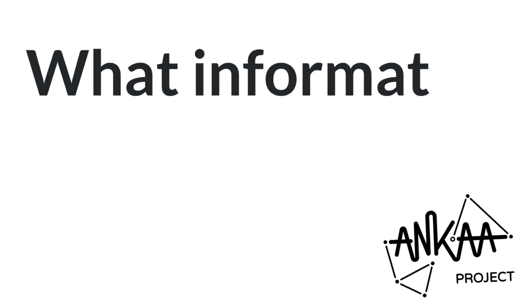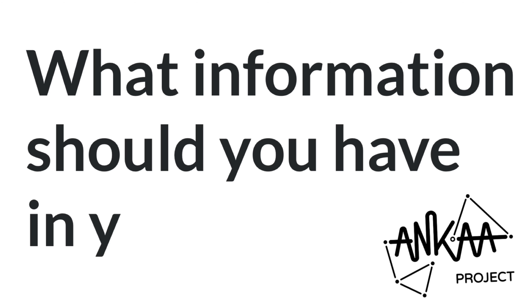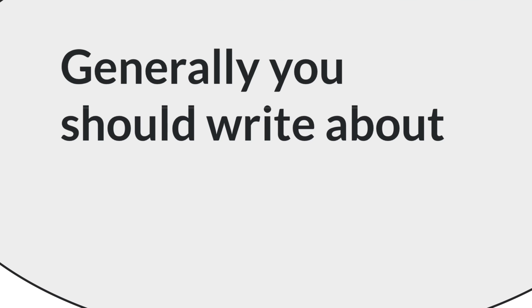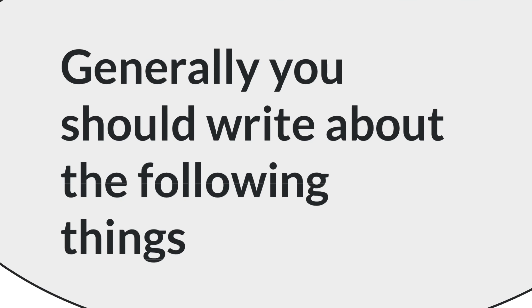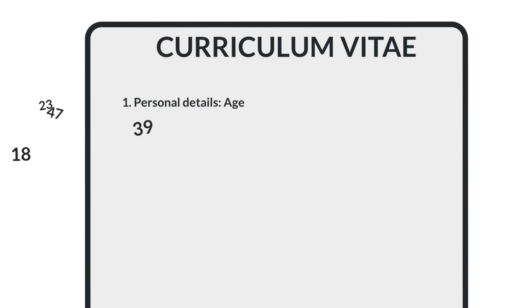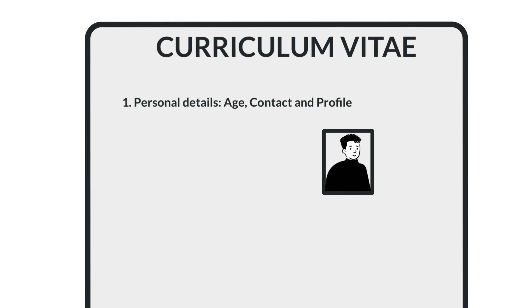Secondly, what information should you have in your CV? Some enterprises want specific information, but generally you should write about the following things. First, personal details: your age, your contact information, and profile picture.